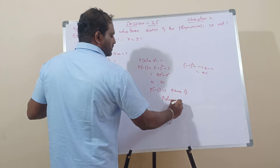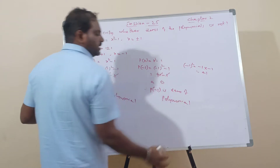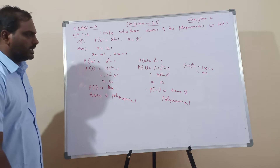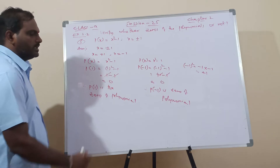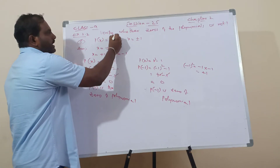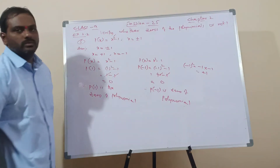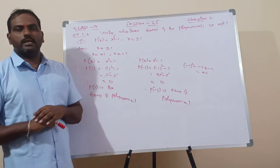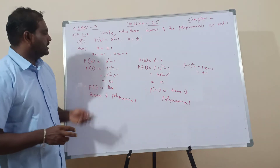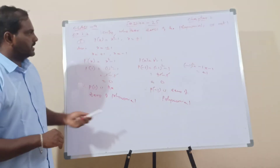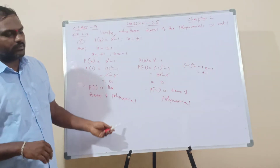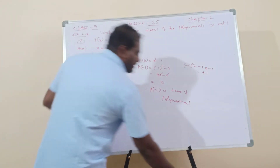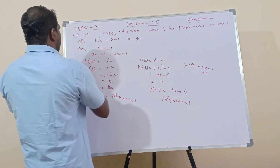So how many zeros did we get? Two. Let us recall: what is the degree of the polynomial? Two. So therefore, how many zeros will it have? Two zeros. So what are the zeros of this polynomial x squared minus 1? Plus 1 and minus 1 are the zeros of the polynomial.